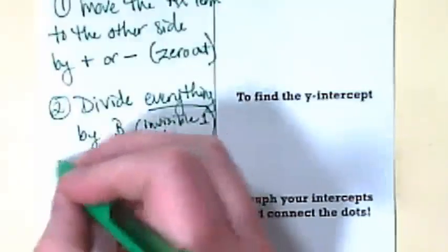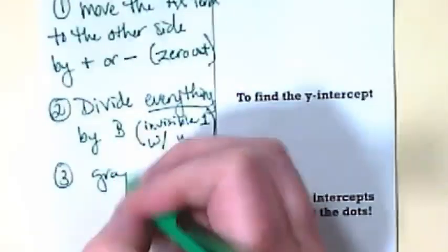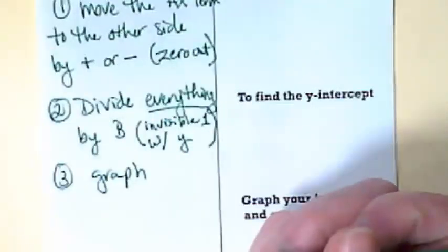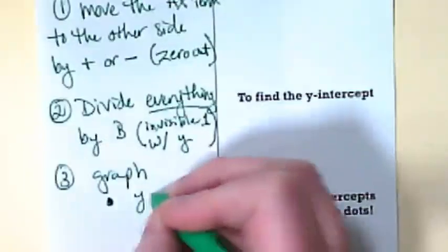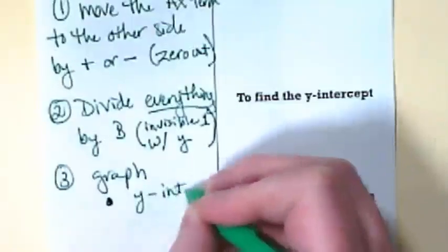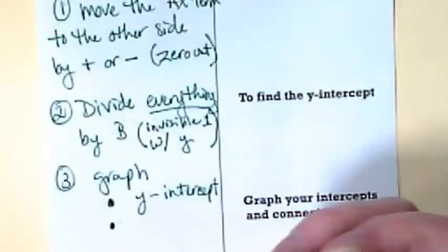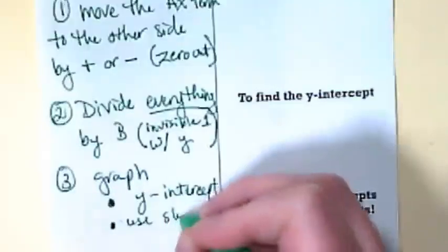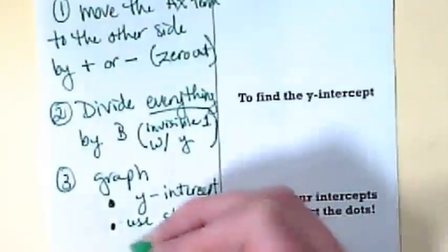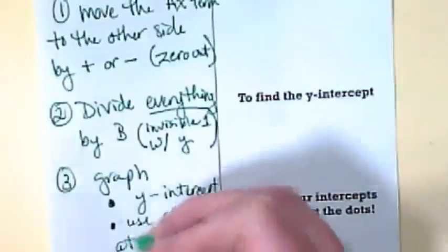Step three is to graph. First part of the graphing is to graph the y-intercept, and then the second part is to use the slope to find one more point. I'm going to say at least one more point.